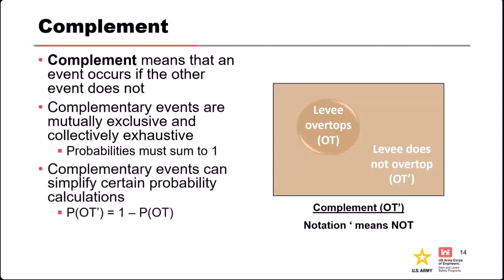This provides some nice properties that lead to common shortcuts we use in our risk models and calculations. For example, if you want to calculate the probability of a levee not failing, you can simply calculate that as one minus the probability of the levee failing. The probability of the levee not overtopping is always going to be one minus the probability of the levee overtopping. This is a far easier way to calculate this number than trying to do it explicitly.